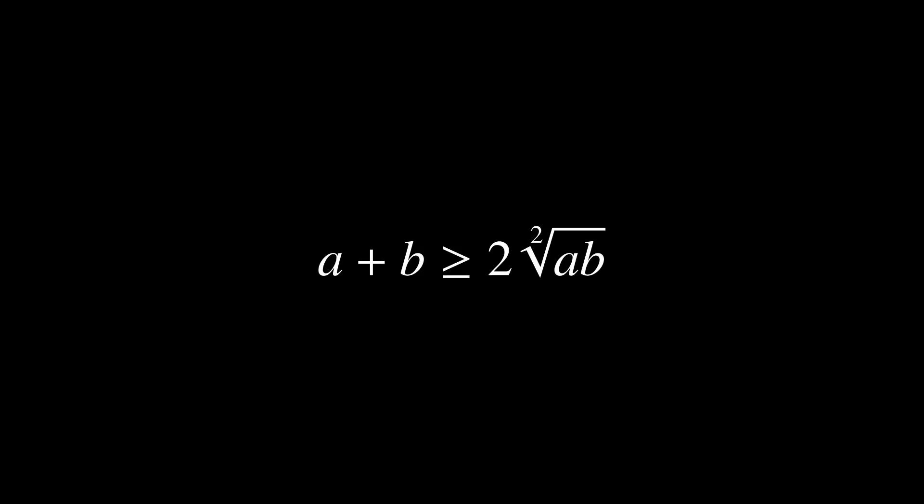Given that this is true for any positive a and b, we can replace a with x, which is the first term in our inequality, and b by y squared over x. A direct simplification with x takes place. Then, another simplification takes place between the square root and the power of two, streamlining our equation.